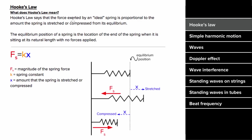Hooke's Law tells you how to find the force exerted by an ideal or linear spring. It tells you the amount of force that spring is going to exert will be proportional to the amount that spring has been stretched or compressed from its equilibrium or natural length. In equation form, the magnitude of the spring force equals the spring constant multiplied by the amount the spring has been stretched or compressed.